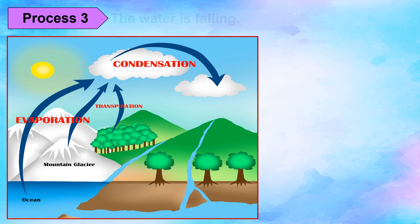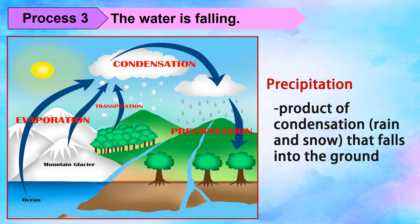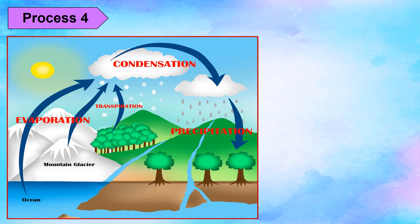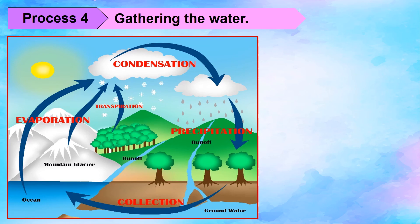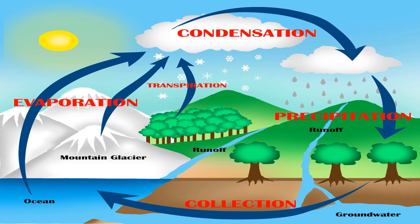Process 3: The water is falling. In this process, precipitation is coming down. Precipitation is the product of condensation, which is commonly rain and snow — the water that falls to the ground. Lastly, Process 4: Gathering the water. In this process, collection is taking place. Collection is the process of gathering water together from precipitation.